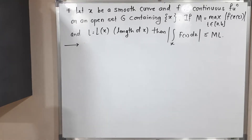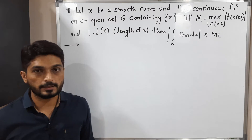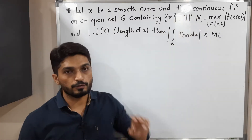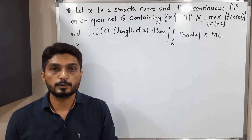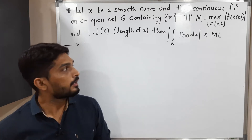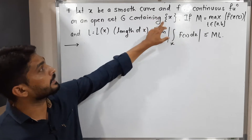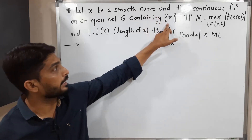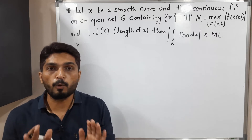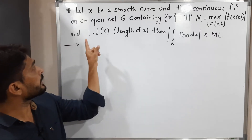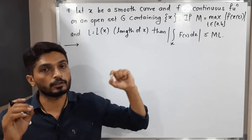Hi everyone, let us discuss this result. We have a smooth curve x, f is a continuous function defined on an open set g which is a subset of complex plane C. The important thing is that g contains curve x, and m is defined as the maximum value of mod f of z, and l is the length of that curve x.